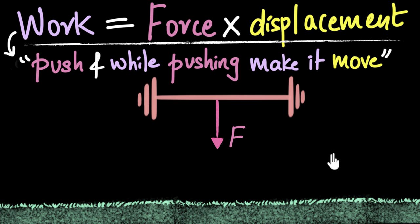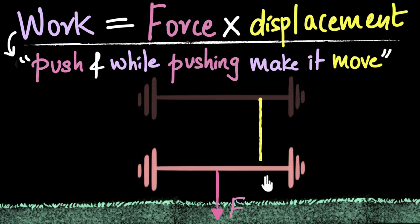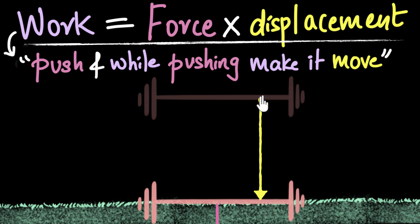So gravity is pulling down on it. And as it's being pulled down, notice it is displaced. It's falling, so it's moving. And therefore, work was done on that barbell. It was not done by people in this example, but it was done by gravity. Any force can do work as long as it can displace that object. It doesn't have to be living things.